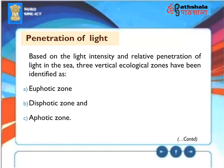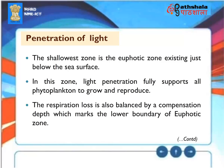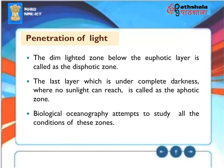Penetration of Light: Based on light intensity and relative penetration of light in the sea, three vertical ecological zones have been identified: the Euphotic Zone, the Dysphotic Zone, and the Aphotic Zone. The Euphotic Zone is the shallowest zone just below the sea surface, where light penetration fully supports all phytoplanktons to grow and reproduce. The respiration loss is balanced by a compensation depth which marks the lower boundary of the Euphotic Zone. The Dysphotic Zone is the dim-lighted zone below the Euphotic layer. The Aphotic Zone is the last layer under complete darkness where no sunlight can reach.